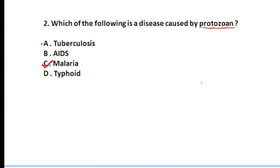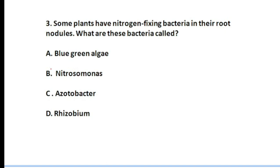Typhoid is actually a bacterial disease. Question number C is malaria. Moving to next question: question number three — some plants have nitrogen-fixing bacteria in their root nodules. These are found in leguminous plants such as pea plants. The nitrogen-fixing bacteria in their roots is called rhizobium.